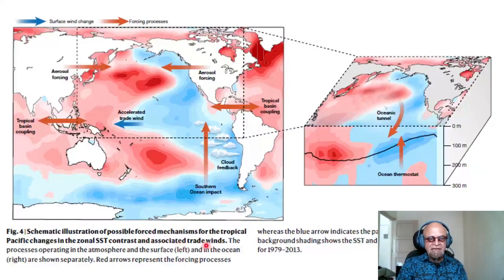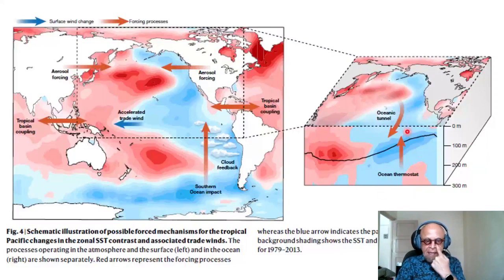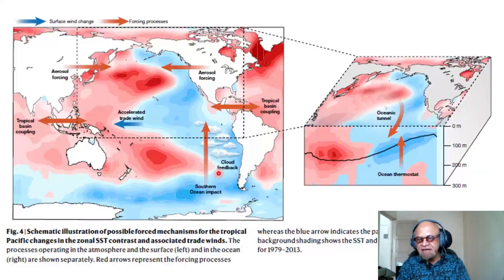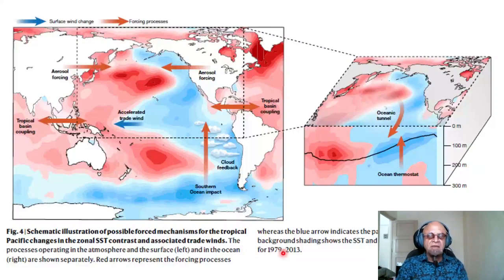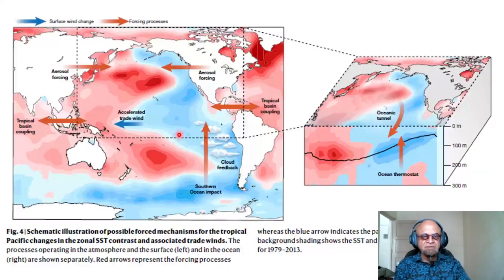Looking at the schematic illustration of possible forced mechanisms for tropical Pacific changes in zonal SST contrast and associated trade winds — relating to the Pacific Walker Cell — the processes operating in the atmosphere and surface are shown on the left, and the ocean on the right. Red arrows represent the forcing processes, while the blue arrow indicates the past strengthening of the PWC. The background shading shows SST and equatorial ocean temperature trends for 1979-2023, which is the strongest observational constraint we have.